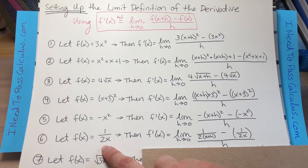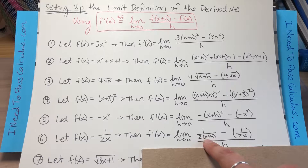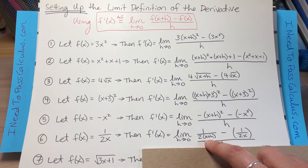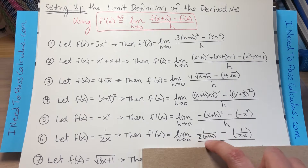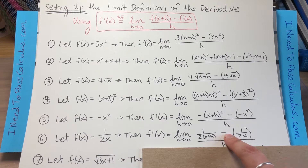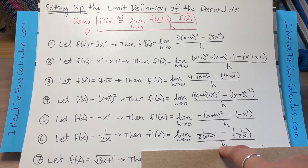For problem six, we have a function with a denominator: f(x) = 1/(2x). When we plug it in, exactly where we had the x originally, we're going to put (x + h). So it becomes 1 over 2(x + h). That 2 is going to end up distributing to both of those terms. Then minus a perfect copy of the original function, all divided by h.